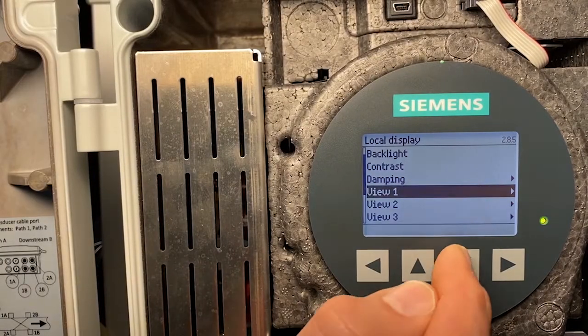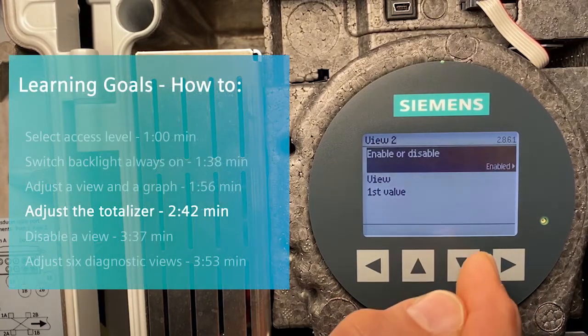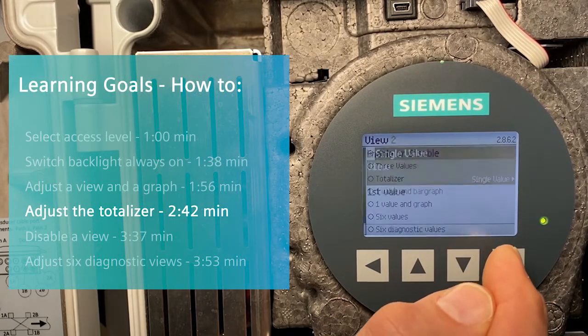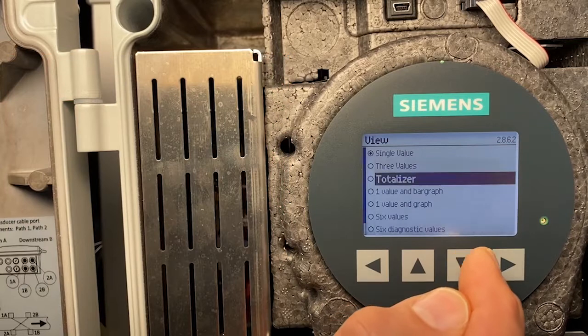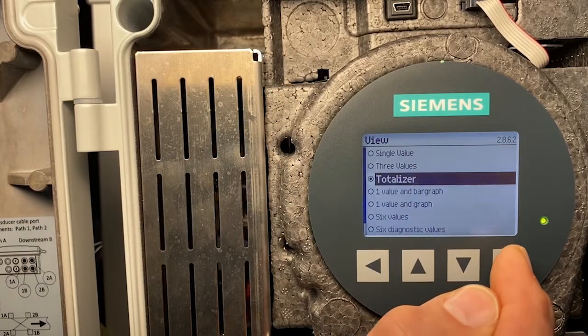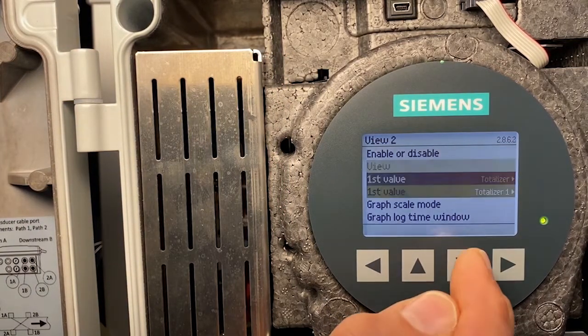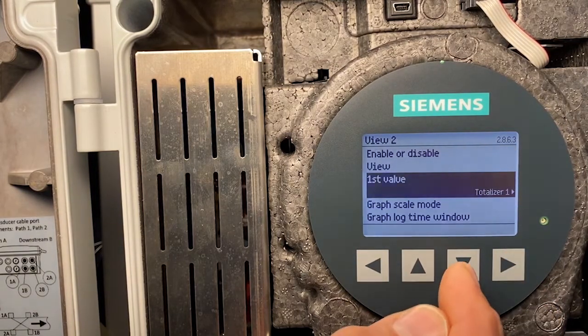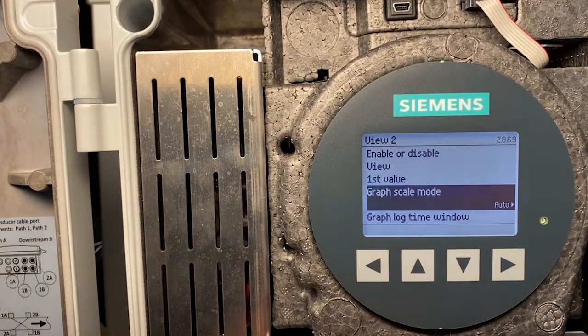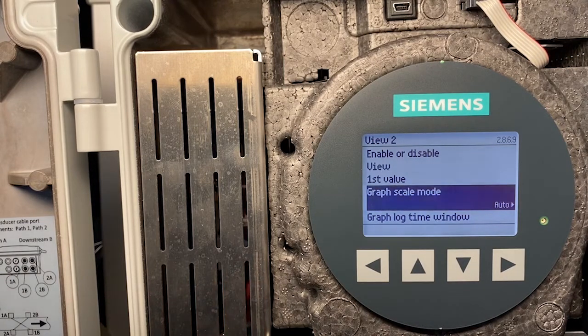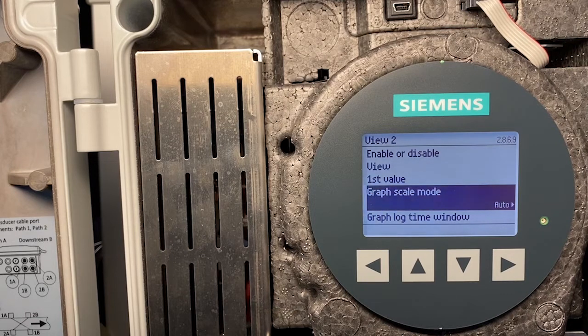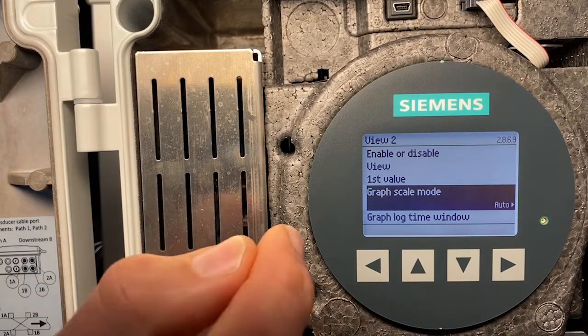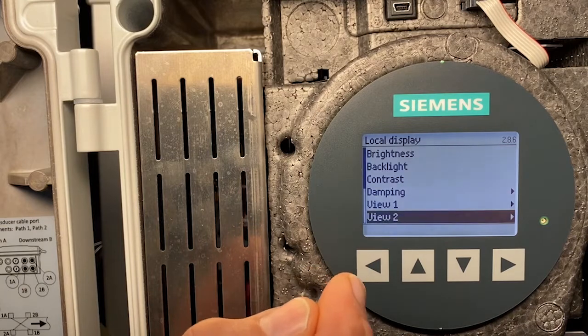View 2. I want to adjust totalizers. First value is totalizer 1. Graph scale mode, I want to keep on auto. I must define what is totalizer 1. This I can do in totalizer.